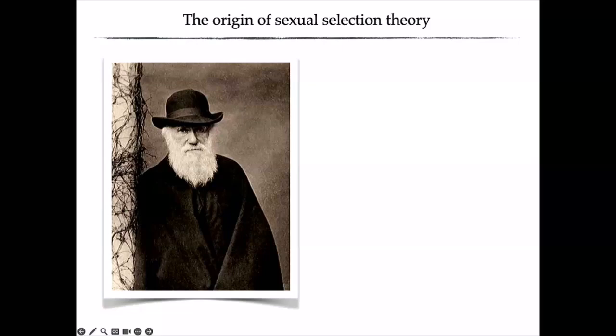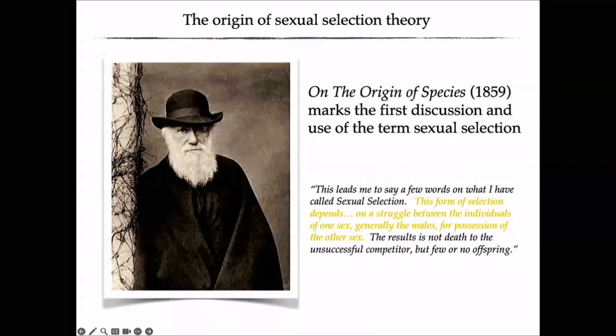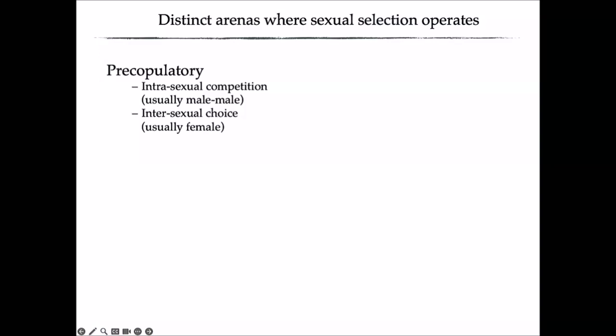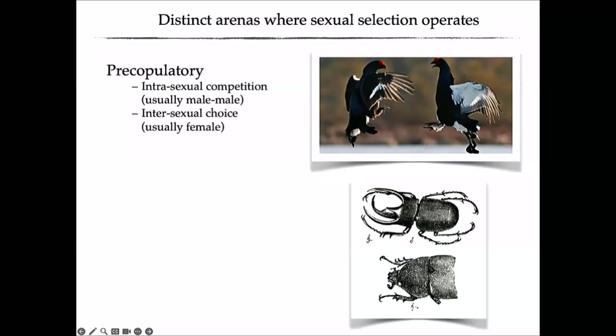The origin of sexual selection theory and the term 'sexual selection' can be traced back to Darwin, first used in On the Origin of Species, and then elaborated much further in his 1871 publication on selection in relation to sex. There are two general distinct arenas where sexual selection operates: pre-copulatory sexual selection, which includes male-male competition and female mate choice, and post-copulatory sexual selection.